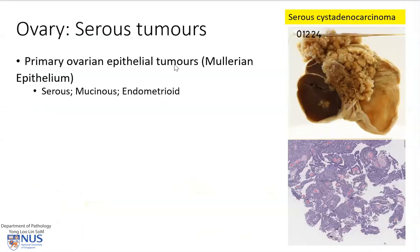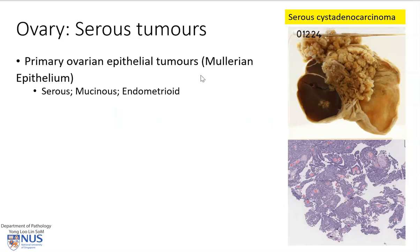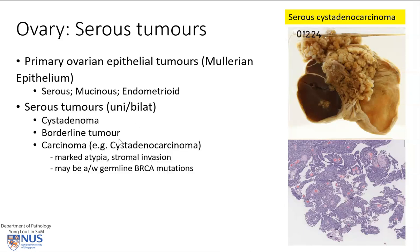A brief summary of serous tumours: serous tumours are primary ovarian epithelial tumours derived from the Mullerian epithelium, as also covered in the talking point on the serous cyst adenoma. The three main histologic types are serous, which are the commonest, mucinous, and endometrioid.